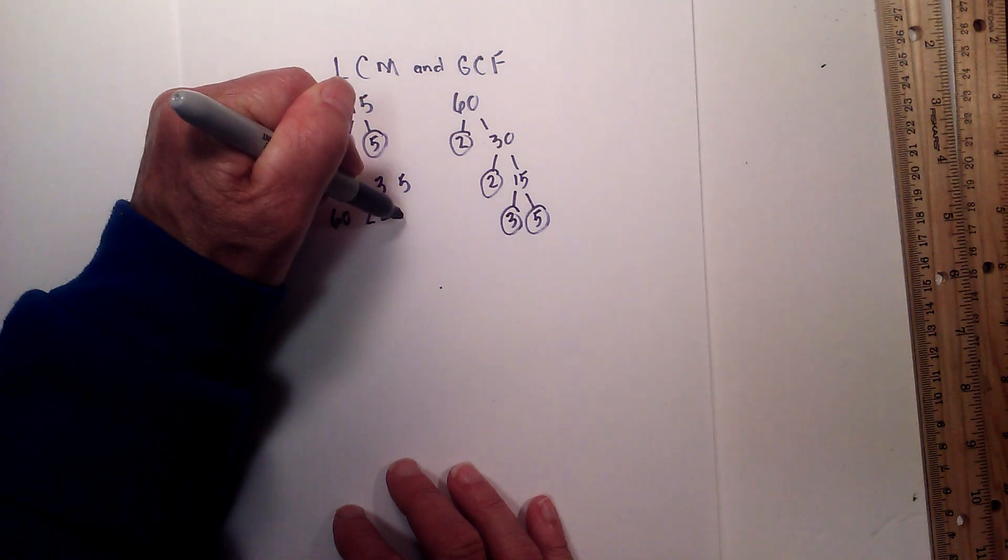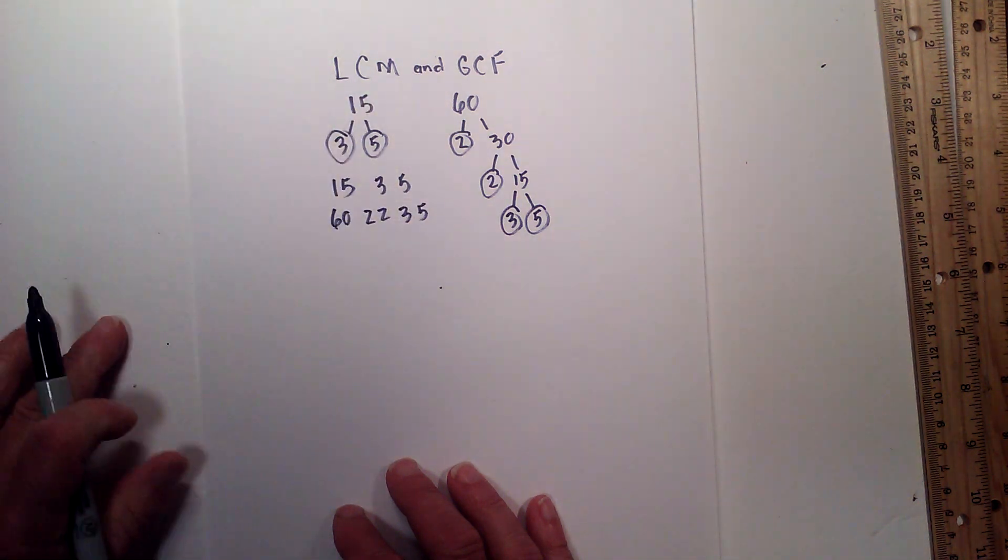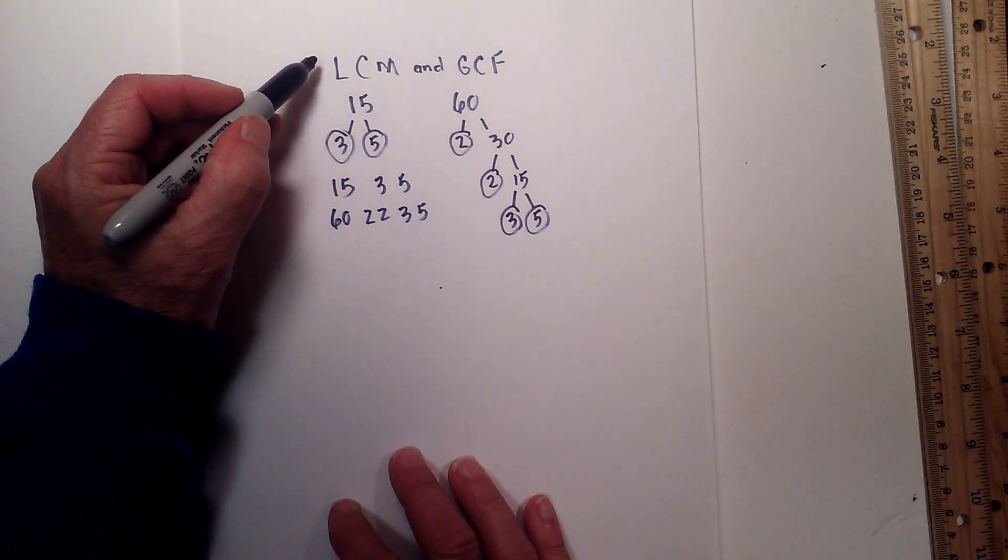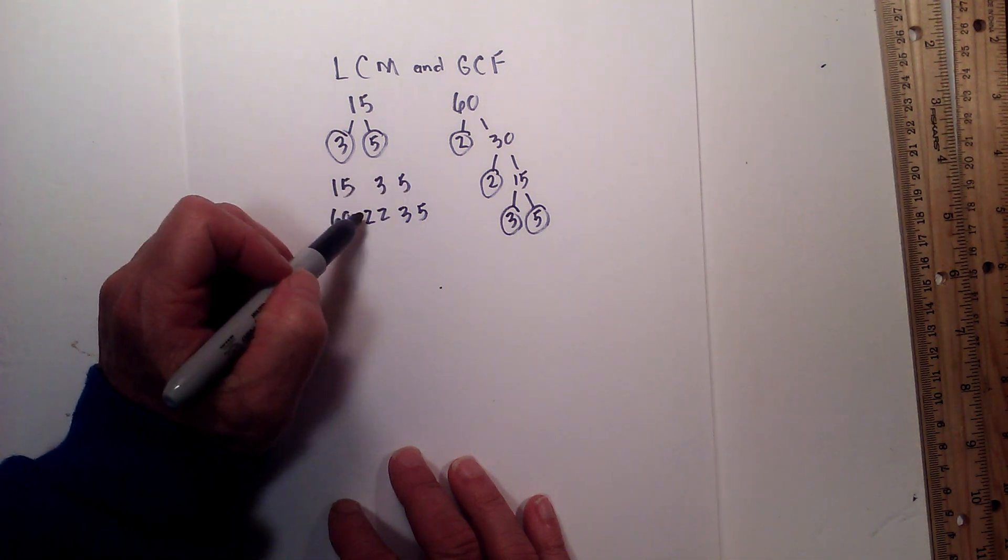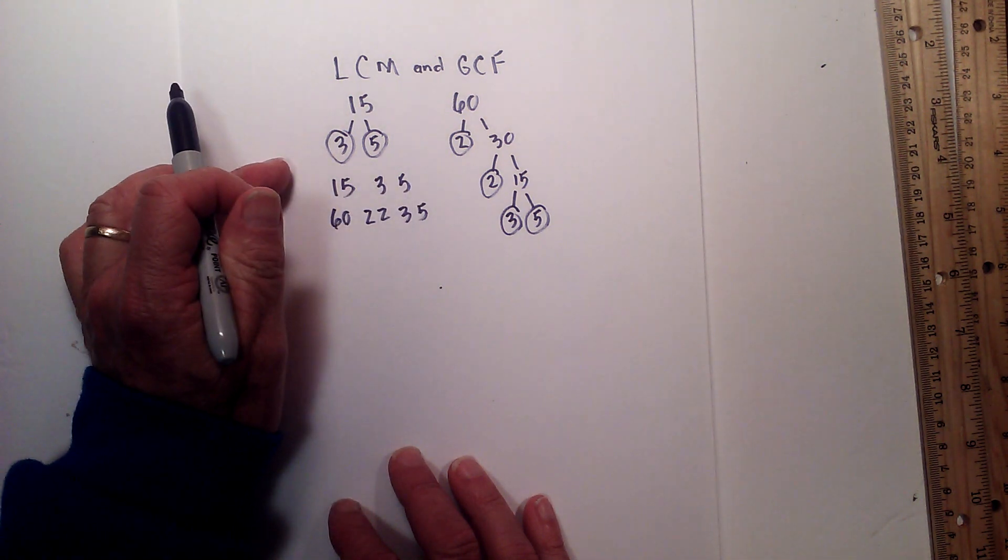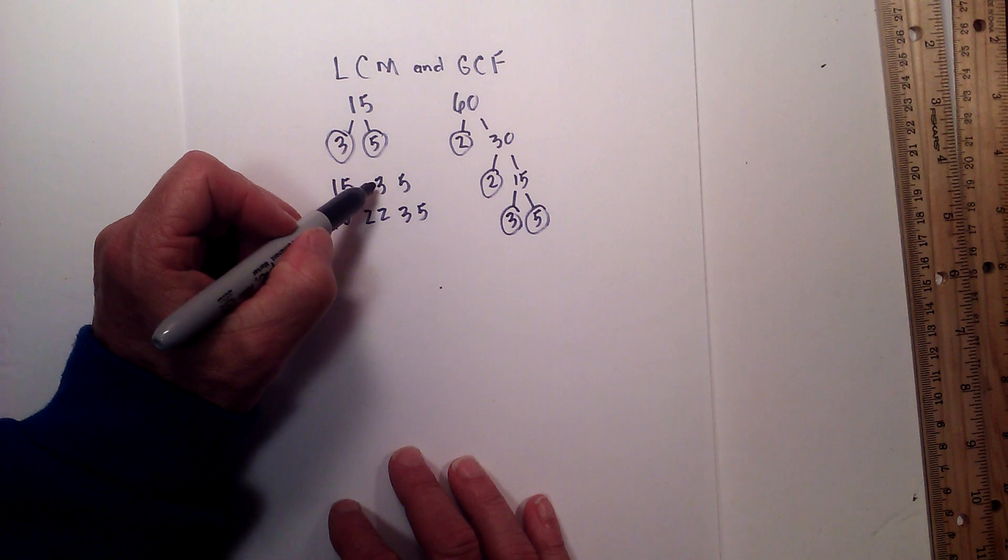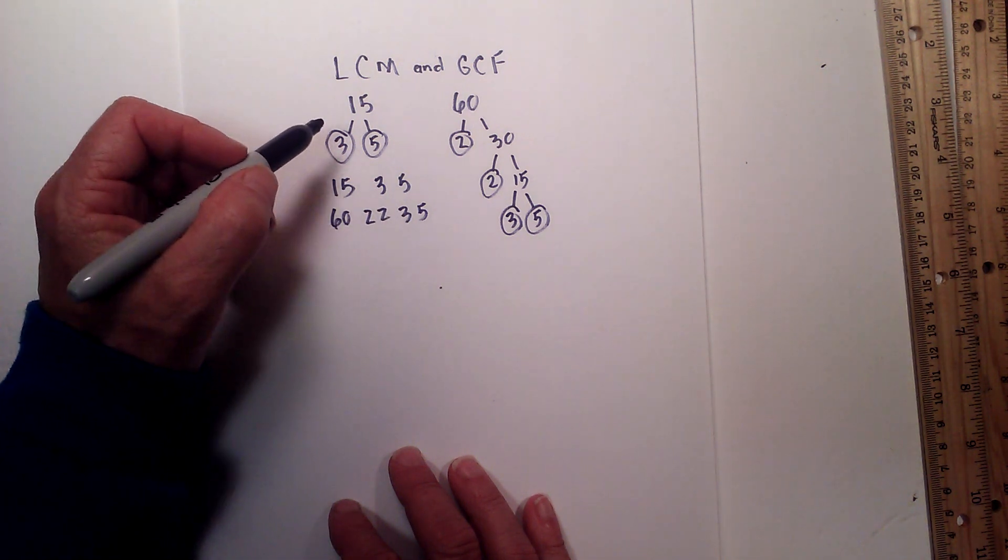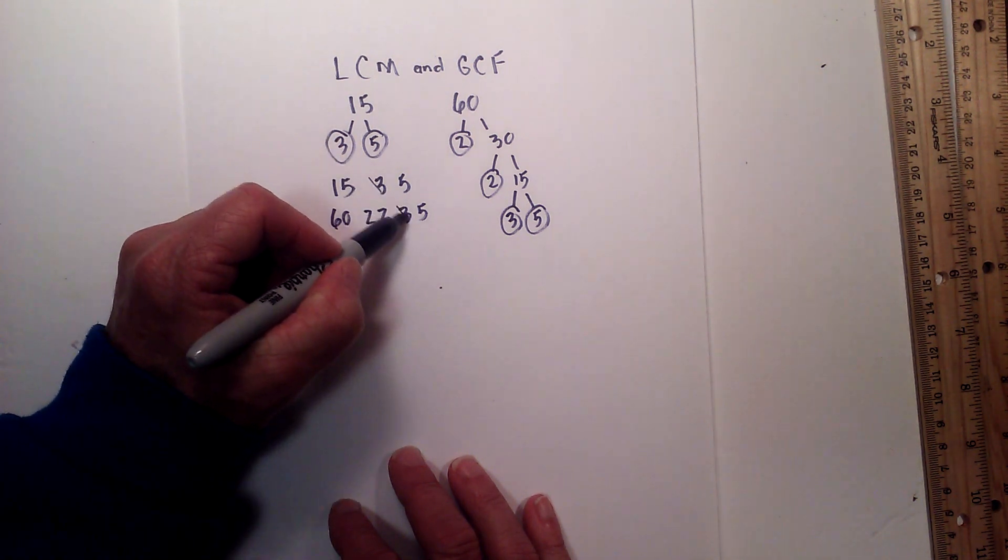Now to find the LCM, I basically multiply all the prime numbers together. However, if they're found in both numbers, I only multiply them once. So I'll start with the 3 and the 3, only multiply them once. 5 and the 5. 2 and 2.